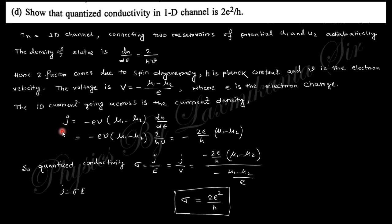Next question says: Show that the quantized conductivity in 1D channel, that is nanowire, nanorod, etc., the quantized conductivity will be 2e²/h. If you consider the density of states which is ε/(hv), 2/(hv), 2 is for spin and h is Planck's constant, v is the velocity. The voltage is minus (μ₁ - μ₂)/e, voltage difference. Current density will be like that minus ev voltage different. Put this value of dn/dε, you will get this. So quantized conductivity is j by ε is the voltage here for unit distance. If you put this value, you will obtain this expression easily.